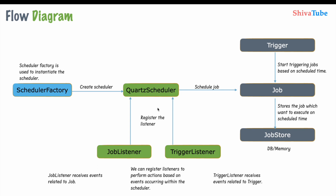This is the flow diagram showing how Quartz Scheduler works. There is a Scheduler Factory — this is where we instantiate our scheduler. Using that scheduler we can schedule jobs. The Scheduler Factory is provided by Quartz Scheduler. There are also two listeners: a Job Listener and a Trigger Listener. Once the job is scheduled, the job data is stored in our database.